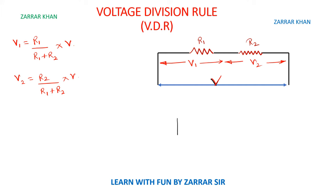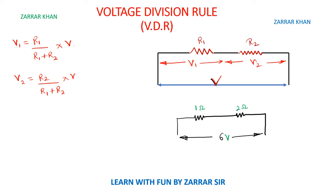Suppose I have been given another example. I have R1 and R2, and the total voltage. I have a total voltage of 6 volts. I have two resistances — one is 1 ohm and another is 2 ohm. I need to calculate V1 and V2. This will be my V1 and this will be my V2.